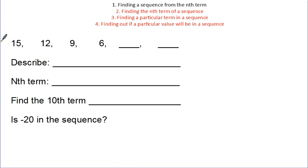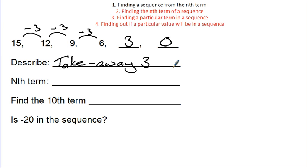Okay, let's look at a decreasing sequence, then. Taking away 3 each time. So, that means this is going to be 3 here, and then 0. Describing it, well, it's take away 3. Or you could say subtract 3 or minus 3, they will be fine.